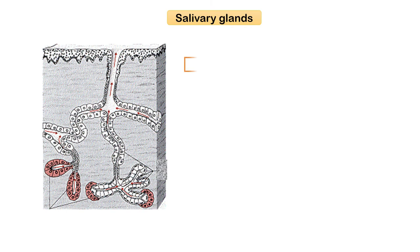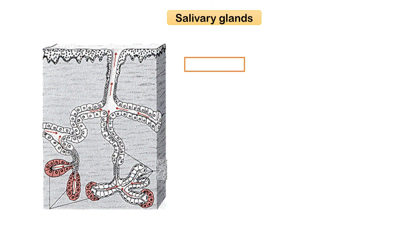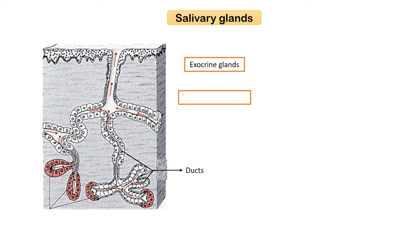Salivary glands are classified as exocrine glands, meaning glands with a duct system to transport secretions from the gland. Salivary glands are tubuloacinar glands, which indicates the presence of a branched duct system and secretory units with both tubular and acinar portions.